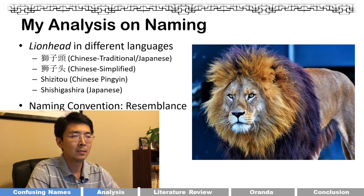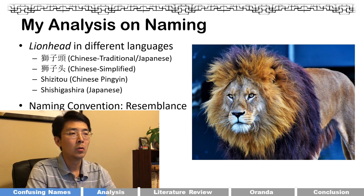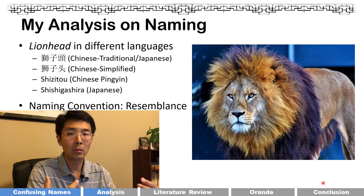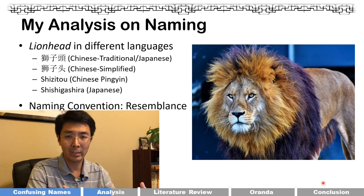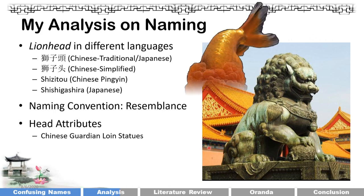The naming convention of 'lionhead' is based on resemblance — there must be some feature of this goldfish that resembles an actual lion. The key feature is the head growth all around the head and neck area. The lionhead attribute is more similar to the Chinese guardian lion. If you've ever visited the Forbidden City, you've seen those Chinese guardian lion statues. The eye-catching feature is all those hair balls, which are very similar to the head growth — the 'wen' — on the goldfish.